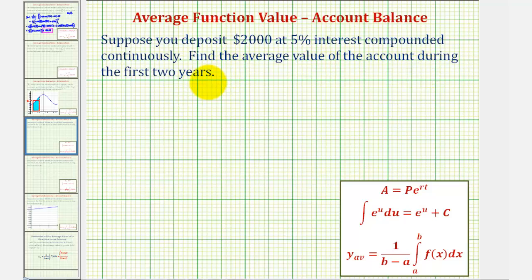Before we find the average value though, let's find the function that would give us the account balance for any time t. We would use the equation a equals p times e raise the power of rt, where a is the amount after time t, p is the principal or starting amount, r is the interest rate expressed as a decimal, and t is time in years.